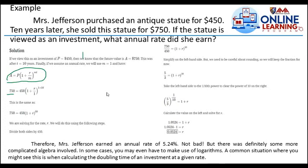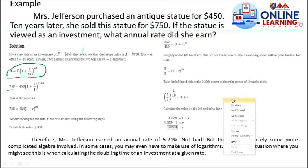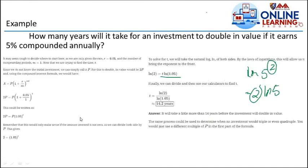But as mentioned here, there was definitely some more complicated algebra involved. In some cases, you may even have to make use of logarithms. A common situation where you might see this is when calculating the doubling time of an investment at a given rate. So how are we going to have that? Example: How many years will it take for an investment to double in value if it earns 5% compounded annually?